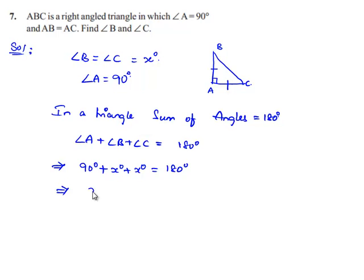That implies 90 degrees plus 2x degrees equals 180 degrees. By transposing 90 degrees to the right-hand side, we get 2x equals 180 minus 90, which is 90 degrees.